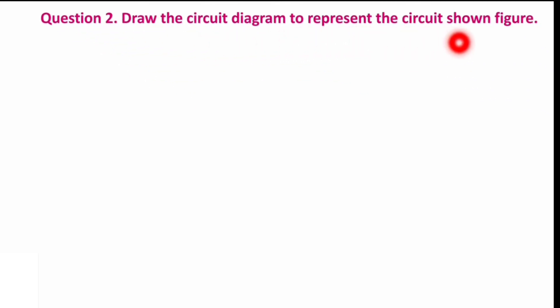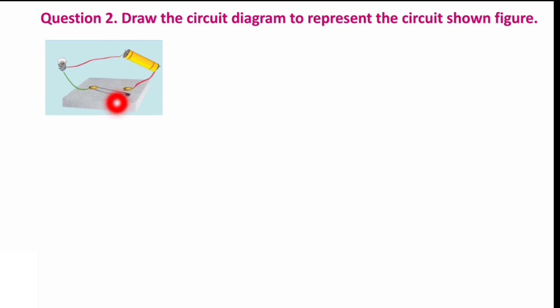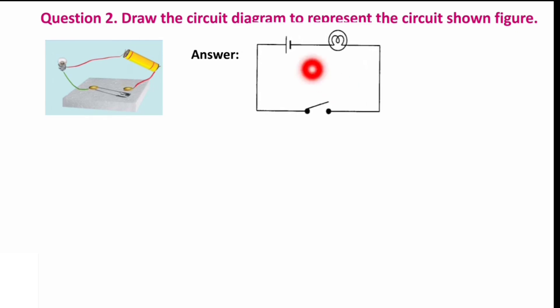Next question: draw the circuit diagram to represent the circuit in the figure. A circuit is given and we need to draw its circuit diagram using symbols. There is a bulb, a cell, and a switch — a safety pin acting as a switch. Here you can see the connection is not complete, so it is an open circuit. The red and green colors represent wires. In the answer: one cell, a bulb, an open circuit, and lines representing the wires connected with each other.